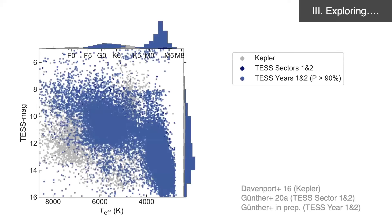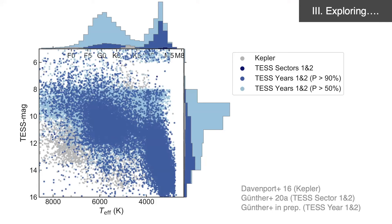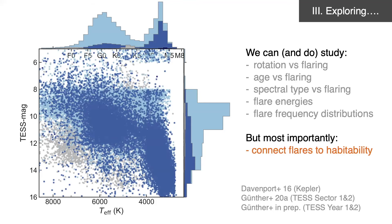With the TESS year one and two study, we can massively expand the entire sample, filling in exactly those areas of parameter space less explored by Kepler — namely early to mid M-dwarf stars as well as bright FGK stars. These are only the stars our machine learning classifier Stella identified with more than 90% confidence as flaring. Including all stars classified with more than 50% confidence expands the numbers even further. With all these findings, we study rotation versus flaring, age versus flaring, spectral type versus flaring, flare energies, and flare frequency distributions — and most importantly, we can connect the flares found in TESS to the habitability criteria introduced at the beginning.